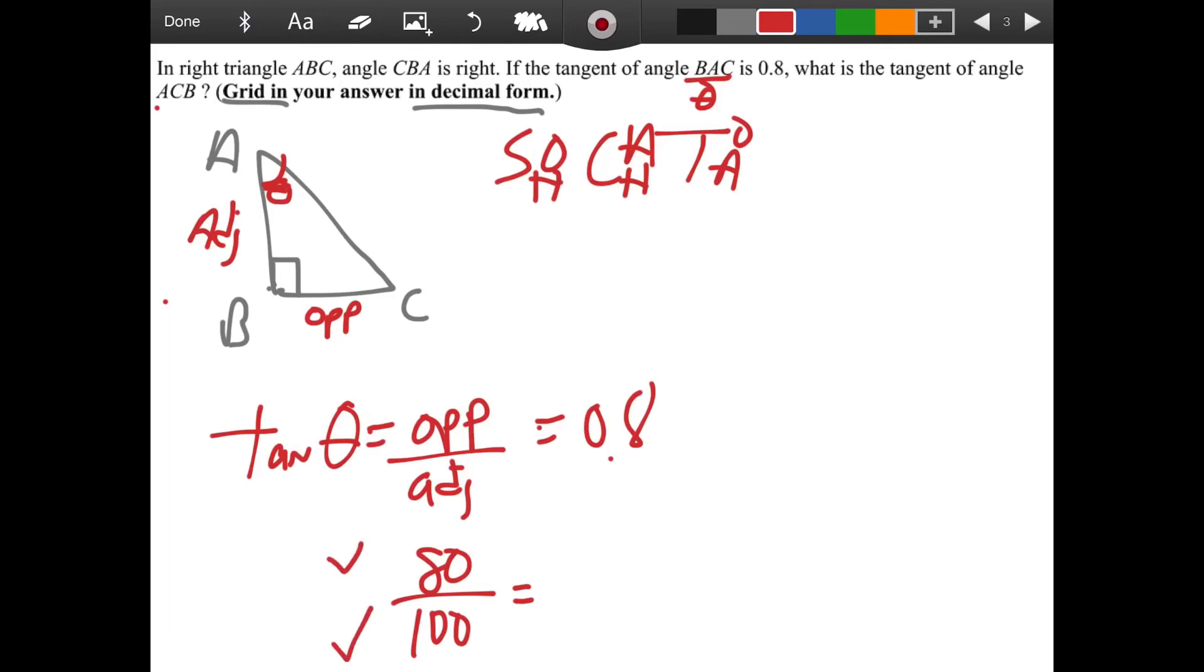So I'm going to roll with that. So this opposite side is 80, and the adjacent side is 100. Now, what this question wants is the tangent of angle ACB. Now, let me use a different color. So ACB.